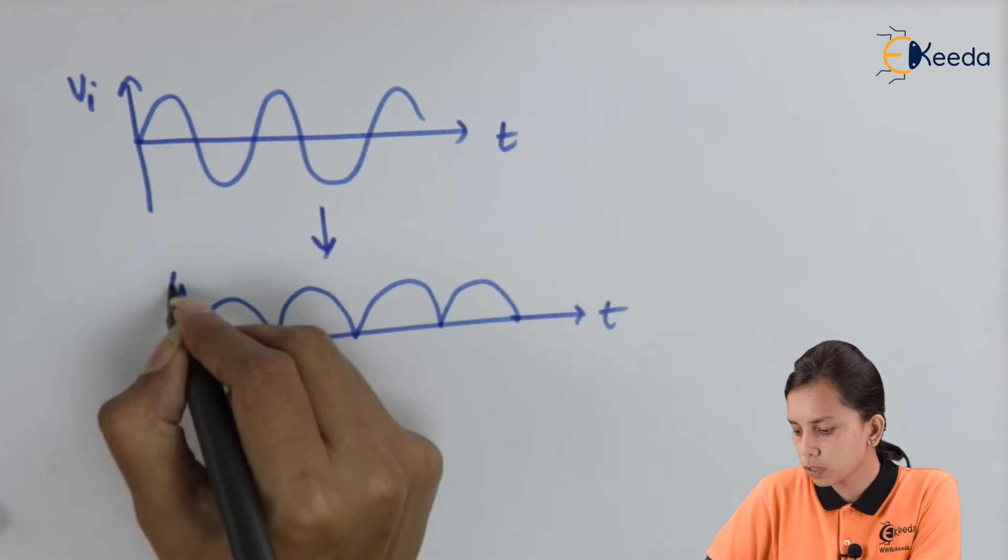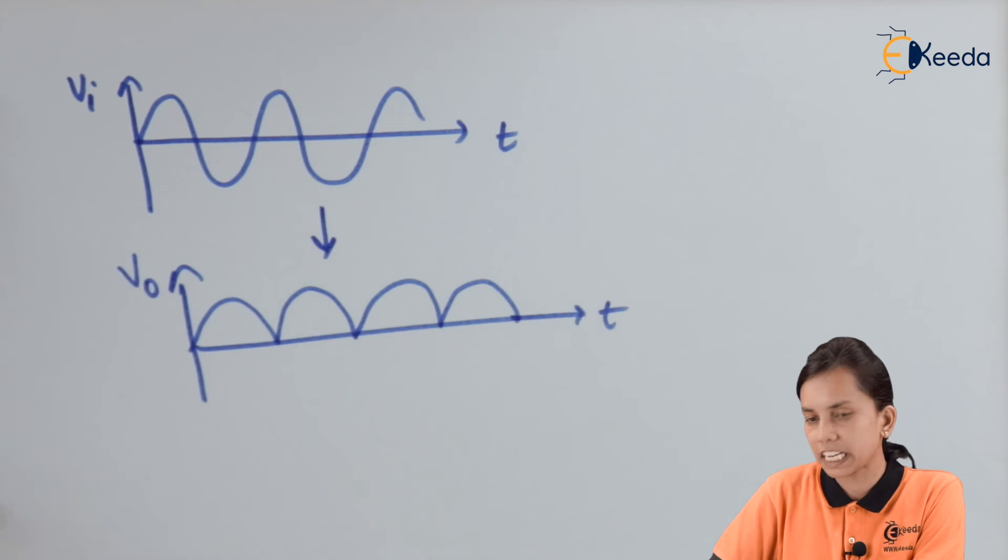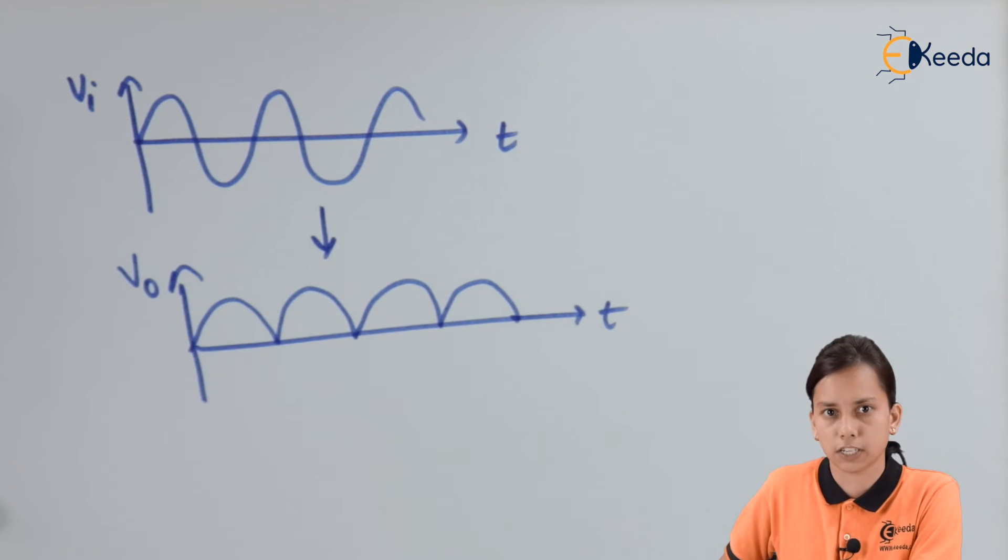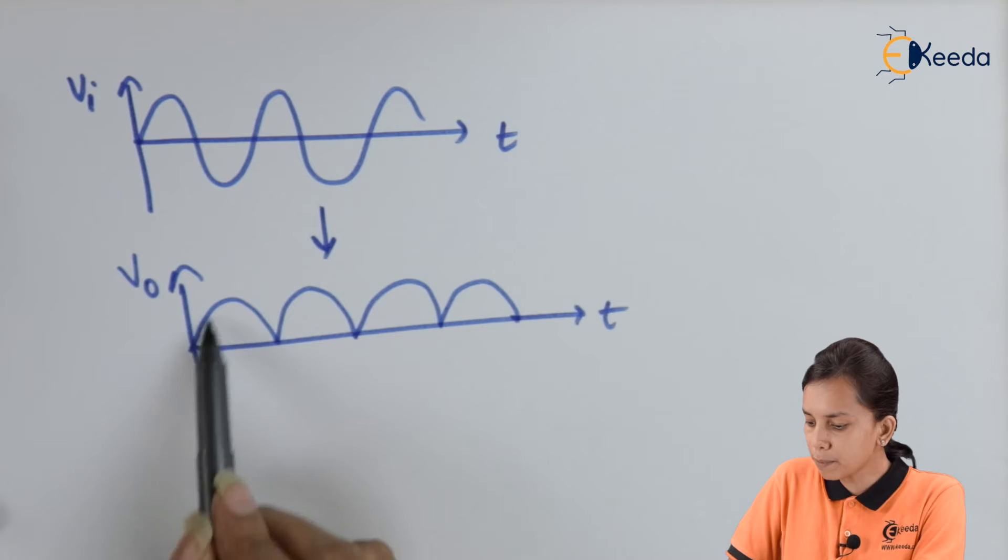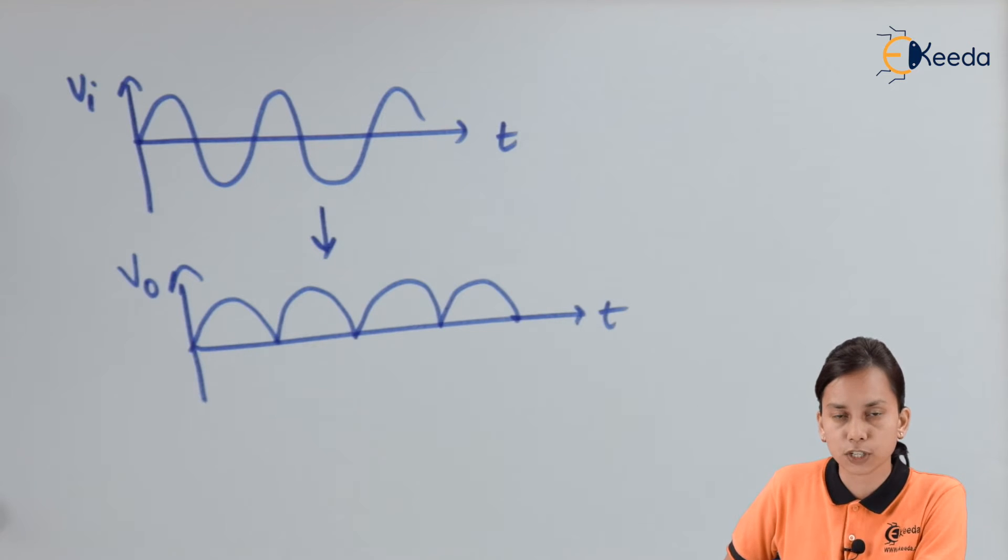This is DC because it is not changing with respect to time or I can say that the direction is not changing. That is why it is known as DC. But that DC is pulsating in nature because we are getting pulses. That is why it is pulsating in nature.